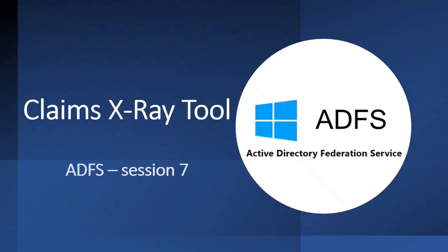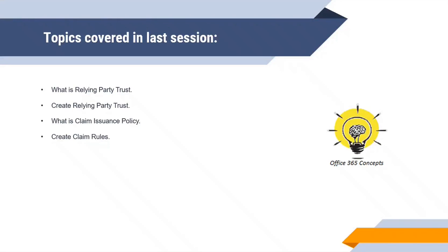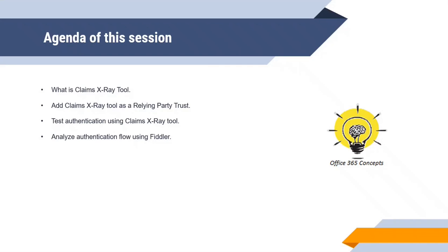Hi guys, welcome to the seventh video of this series where we are discussing Active Directory Federation Service or ADFS. In the last video, we discussed Relying Party Trust, claims issuance policy, and how to create a claim rule so that ADFS can send specific claims to the application within the token. In this video, we will be discussing the Claims X-ray tool. I will show you practically how to add Claims X-ray tool as a Relying Party Trust and how we can use this tool to test ADFS authentication.